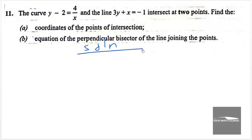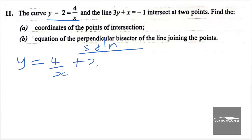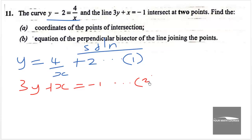To find the point of intersection of two equations — a curve and a line — we have to solve the two equations simultaneously. The equation of the curve is y equals 4 over x plus 2; we call this equation 1. The second equation is the equation of the straight line: 3y plus x equals negative 1; we call this equation 2.